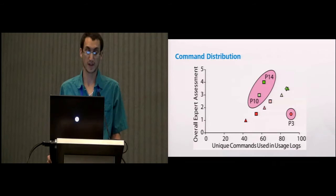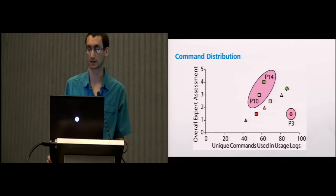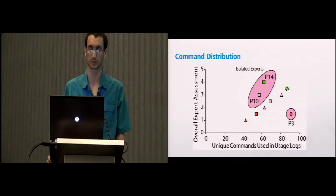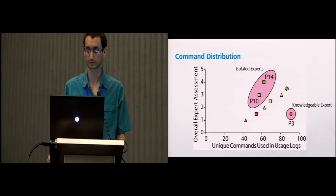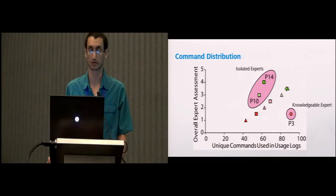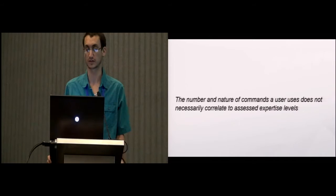First, the command distribution: the unique number of commands they use from the usage logs. There wasn't a correlation here. You can see there's sort of two groups of what you might call outliers. That first group is what we'd call isolated experts who had really strong expert assessments but don't use as many commands. They probably just focus on areas of the application most relevant to them. Then we'd have what we'd probably term a knowledgeable expert who used almost the most number of unique commands but had a much lower overall expert assessment. It shows that the nature of commands a user uses does not necessarily correlate to expertise levels.